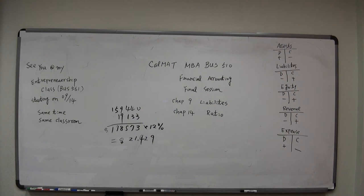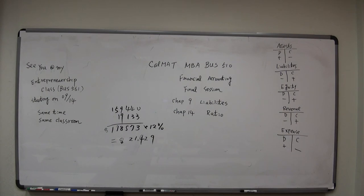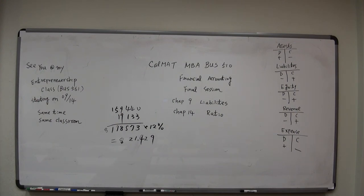How do we get 2.44? It's a very complicated formula — I won't go into it, but this is the formula. You use either Excel or a financial calculator. In Excel you just pick the present value of annuity function, enter interest rate 11% and three payments, and you get this number.